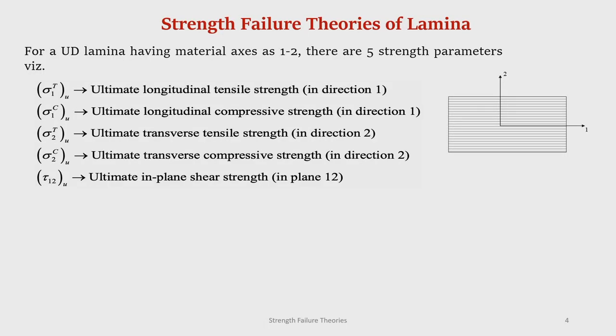This is the difference while addressing the strength failure theories for orthotropic material compared to that in the isotropic material. Now, in the case of isotropic material we have two or maximum three strength parameters, but in the case of an orthotropic material we have five strength parameters — with reference to the principal material directions.